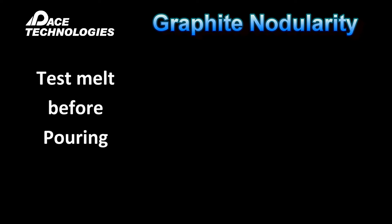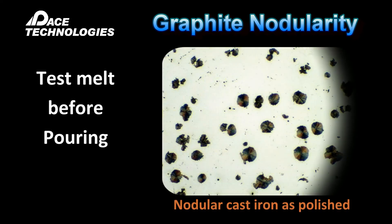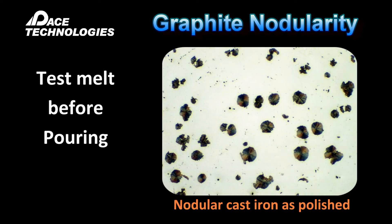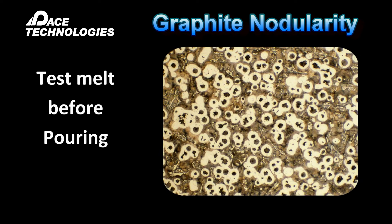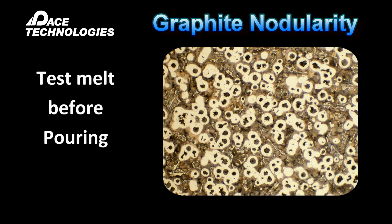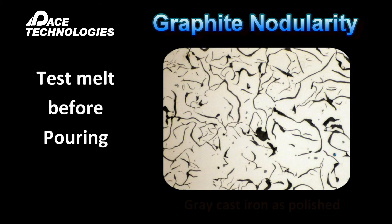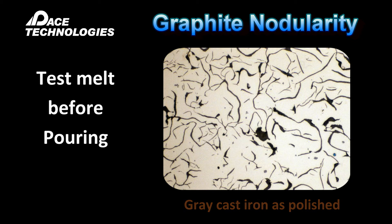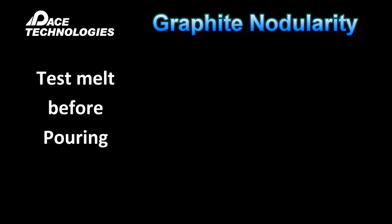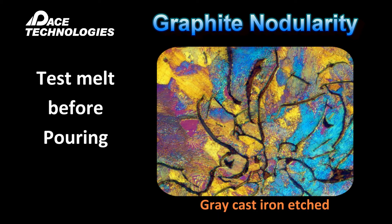Ductile cast irons are characterized by their nodularity. Gray cast iron is characterized by their graphite flakes. Since gray cast irons can eventually fail due to brittle fracture, ductile nodular cast irons are the preferred structure. To produce ductile cast irons, magnesium or cerium are added to the iron melt prior to solidification. Cross-sectional analysis is used to characterize the melt prior to pouring the entire batch.